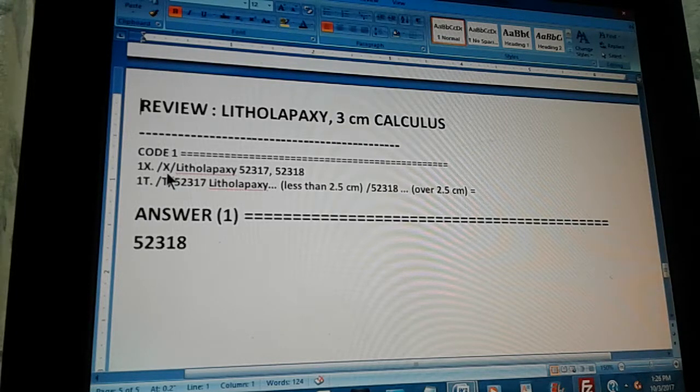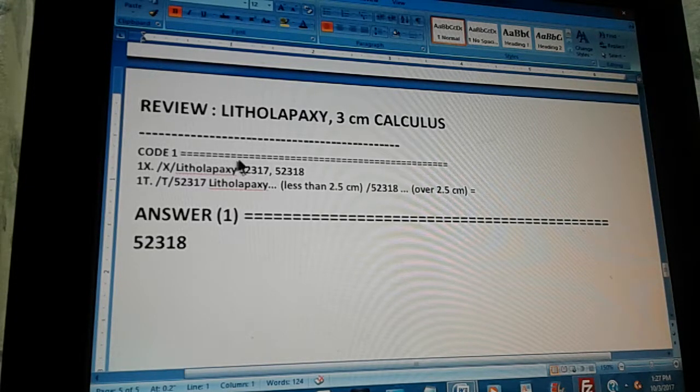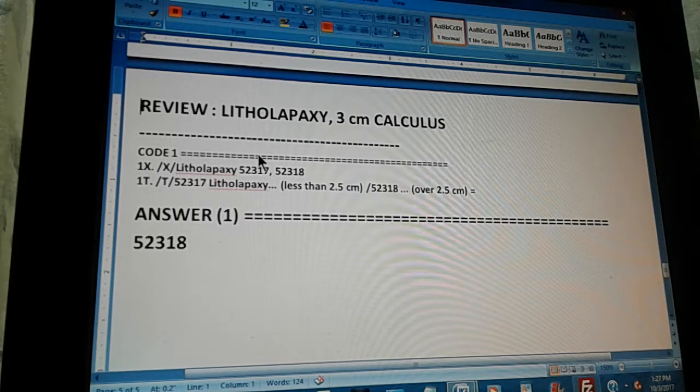The code through the index is found like this. First one is the index. Go to the index. Then you start with litholapaxy. Although, the word is very difficult. You probably don't even know how to pronounce it. It doesn't matter. All you got to do is just follow it alphabetically. The L comes first, the I comes second, the T comes third, and so on.